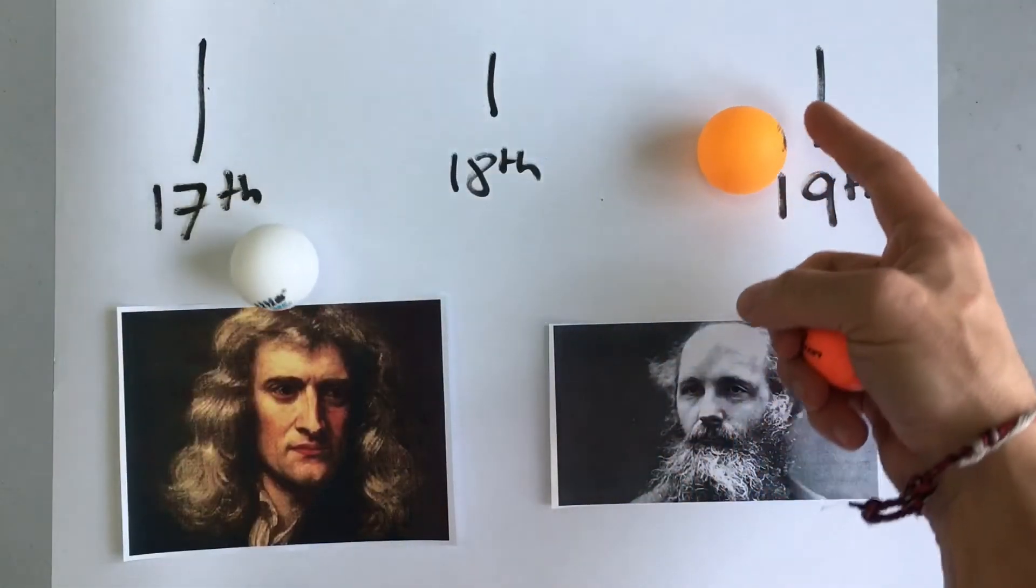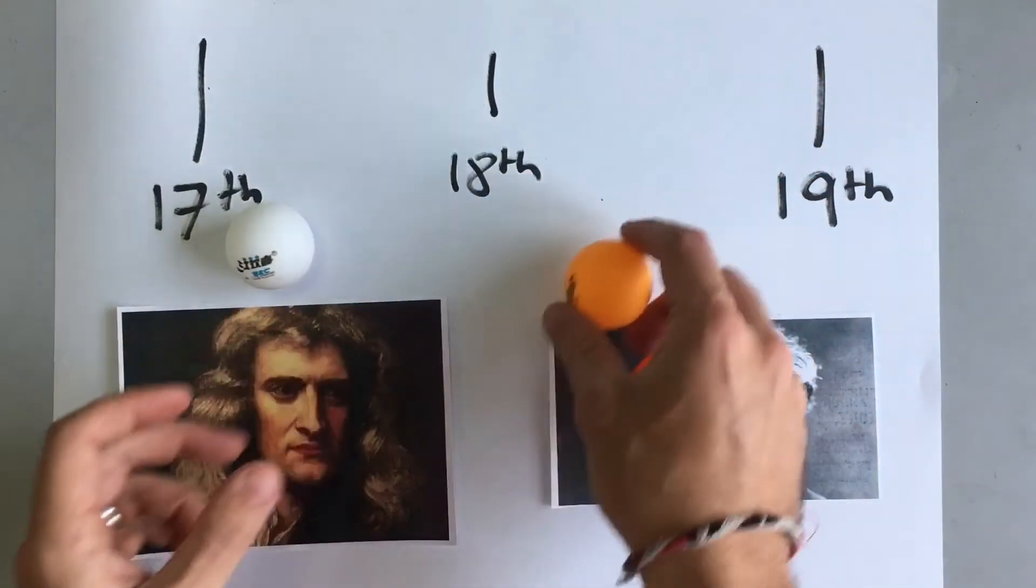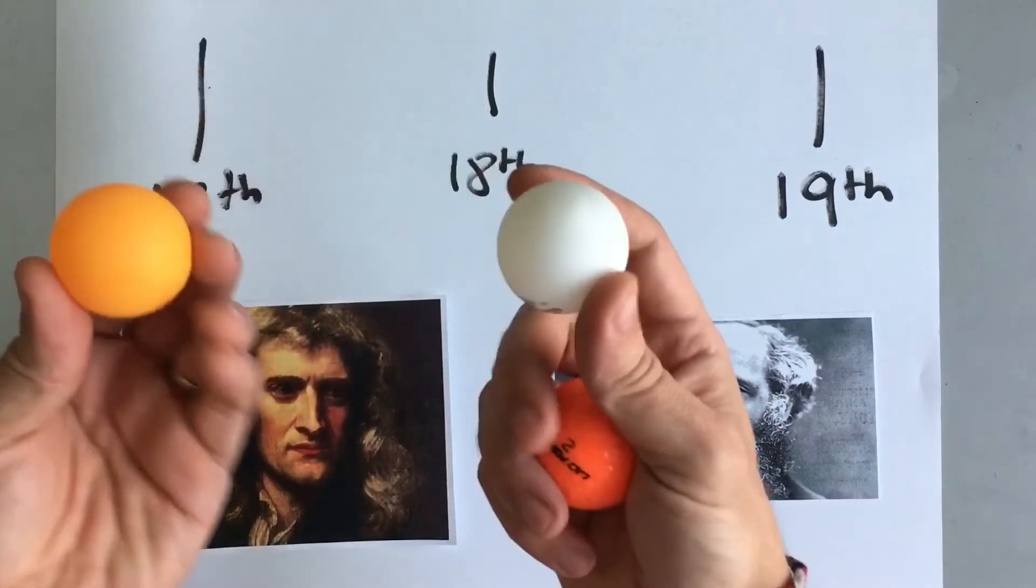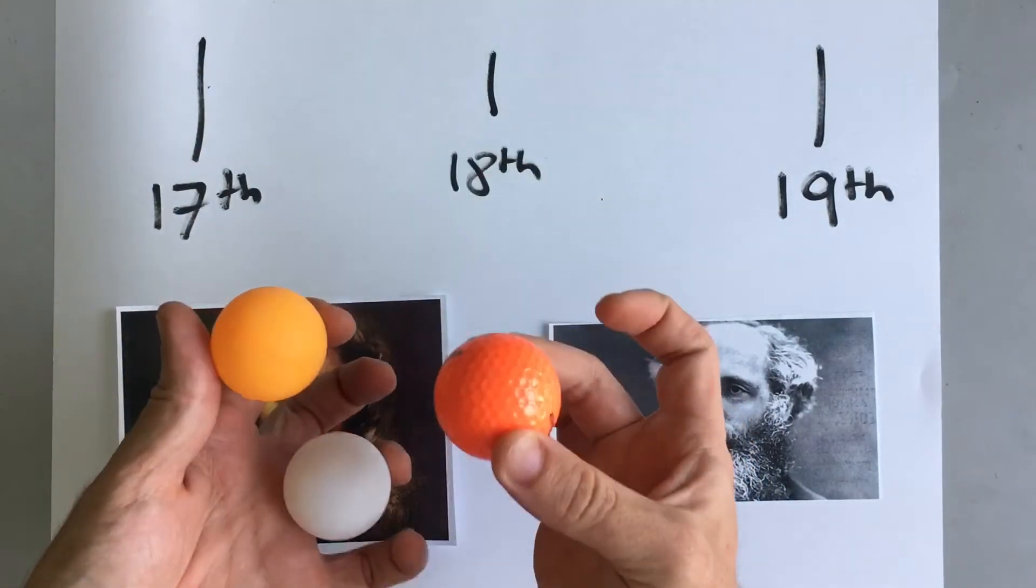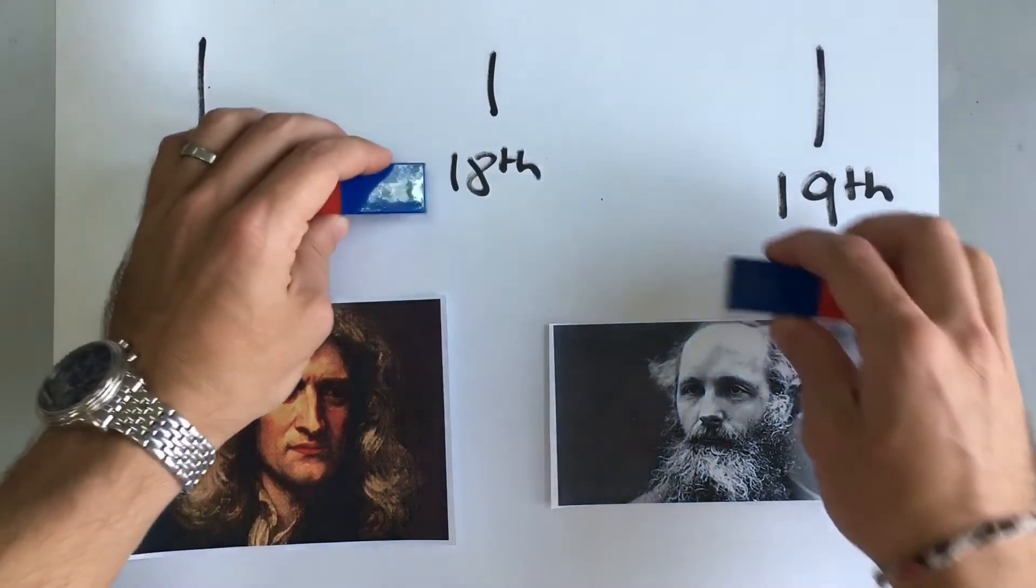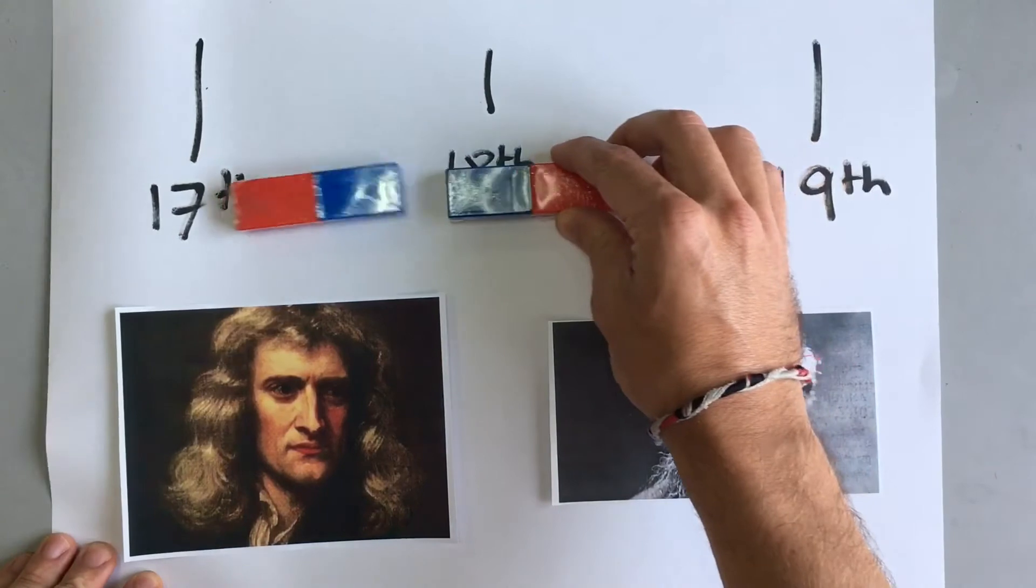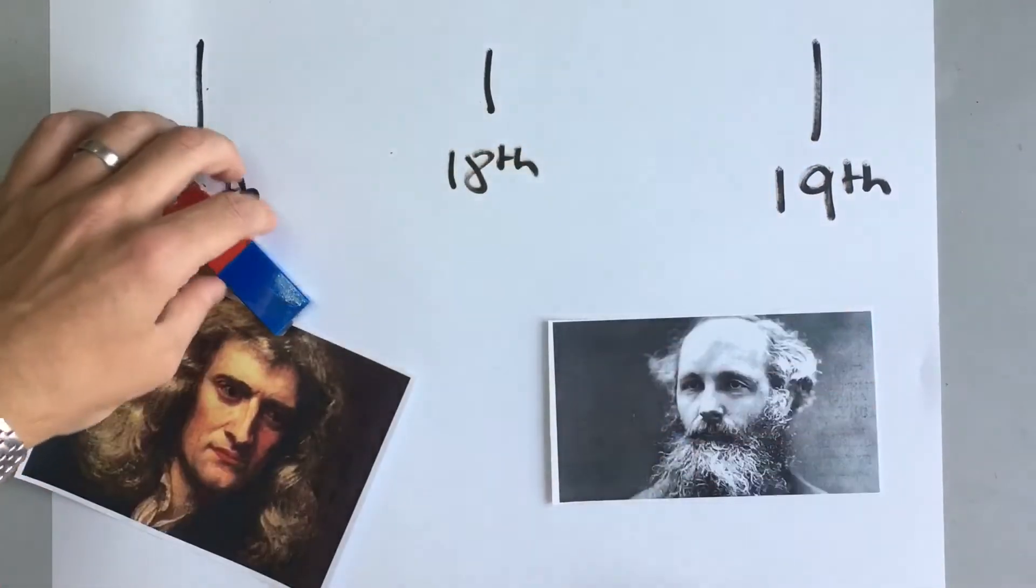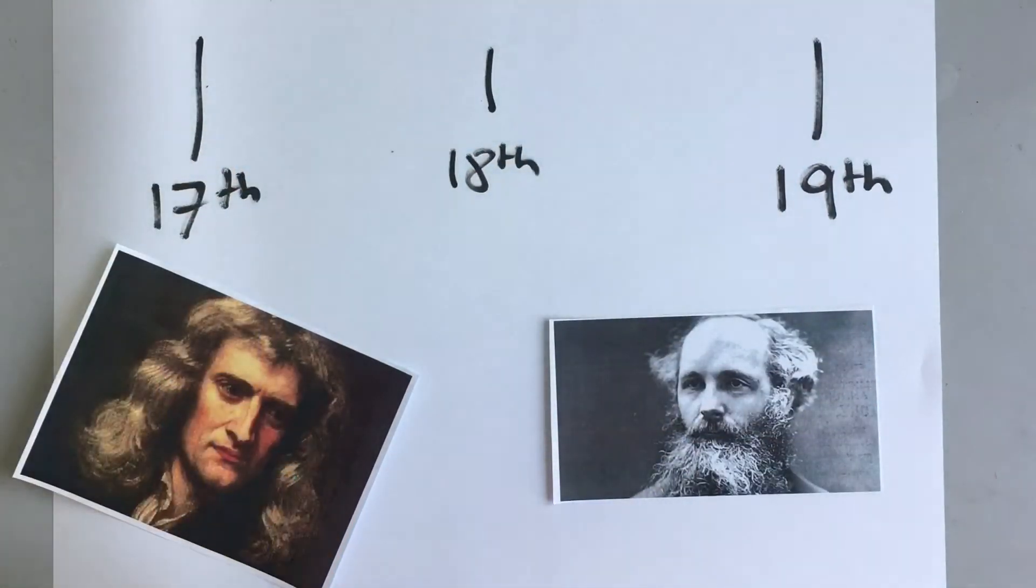Similarly, if we use a lighter ball and we roll it, different things happen depending on the mass, but we can always predict what's going to happen. James Clark Maxwell taught us about electromagnetism, and he made loads of important discoveries about magnets and electricity, and how either of those things work.